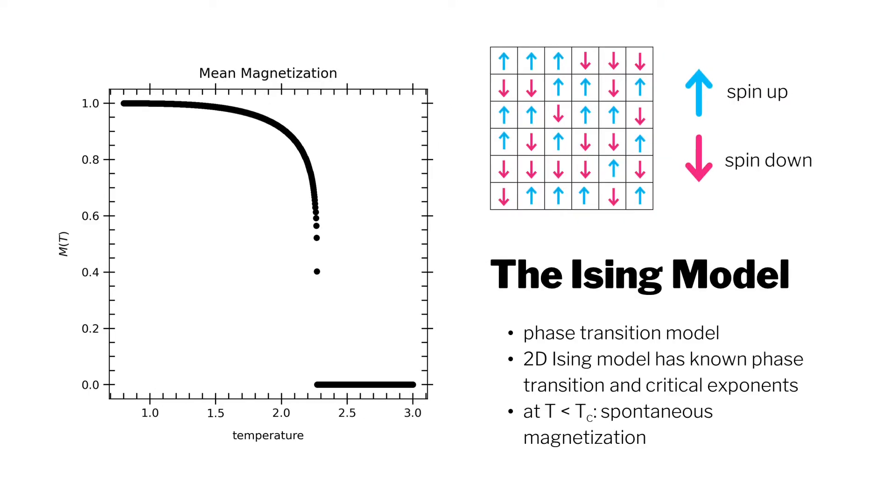One of the widely used models to describe the behavior of phase transition is the 2D Ising model. The 2D Ising model represents a system as a lattice of spins with nearest neighbor interaction. Below the critical temperature, the Ising model has non-zero magnetization, where a single large cluster usually dominates the system due to a behavior called spontaneous magnetization.